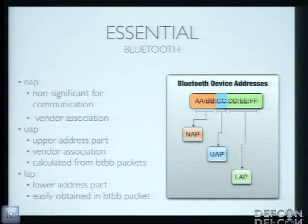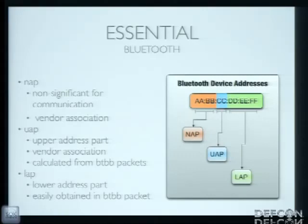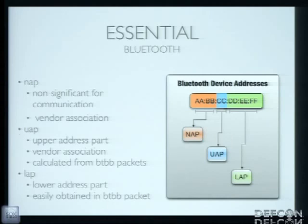We split Bluetooth addresses up into three subsections: the NAP, the UAP, and the LAP. The NAP is the non-significant address part — we don't need it, and luckily it's actually the hardest part to obtain when we're passively monitoring Bluetooth. The UAP can be derived from packets obtained during passive Bluetooth monitoring if the packet actually has a payload, by checking its CRC. So we won't always have UAP, but we can get it sometimes. The LAP is basically given to us in Bluetooth baseband traffic and we can pretty much always guarantee it's going to be there.